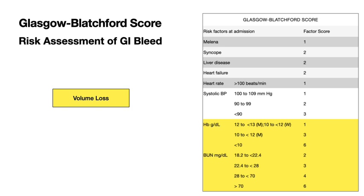In addition to GI bleed and volume loss, there is one other thing included in the scoring: whether the patient has comorbid conditions. If a patient has coffee ground emesis and has liver disease like cirrhosis, you have to wonder whether it is a variceal bleeding. In that case, you should admit the patient and not discharge them. So comorbid conditions are the third factor.